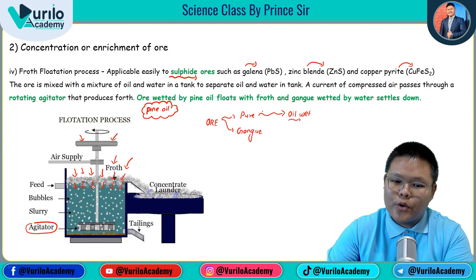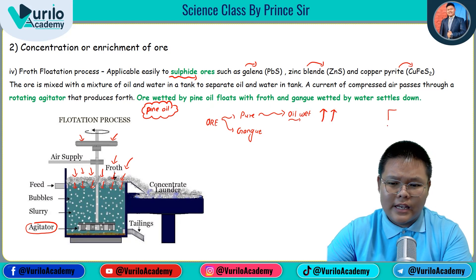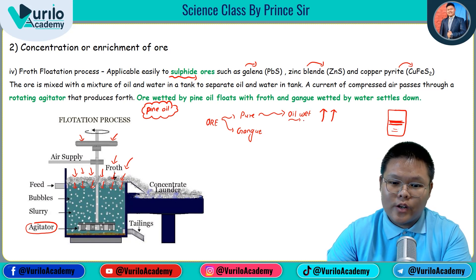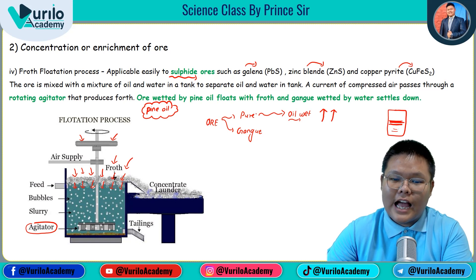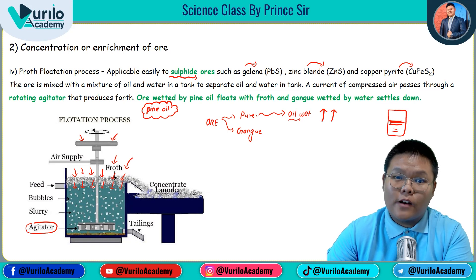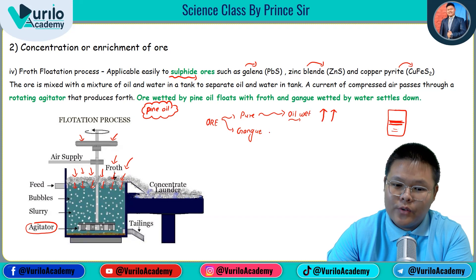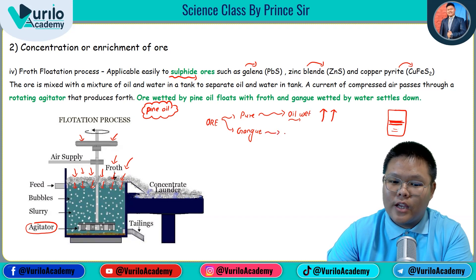In froth flotation, pine oil is mixed with water and the powdered ore. The pure metal ore is insoluble in water and floats with the froth to the top, like oil floating on water. The impurities and gangue settle down in the water at the bottom, allowing separation of the pure metal from the gangue.